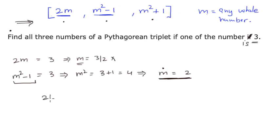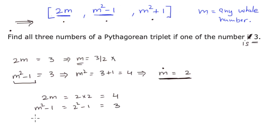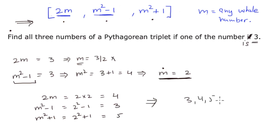The first number will be 2m, which is 2 times 2, equaling 4. The second number is m squared minus 1, which is 2 squared minus 1, giving 4 minus 1, which is 3. The third number is m squared plus 1, which is 2 squared plus 1, giving 5. So the Pythagorean triplet is 3, 4, and 5, and it does satisfy the statement that one of the numbers is 3.